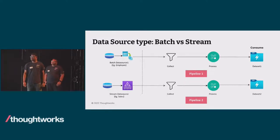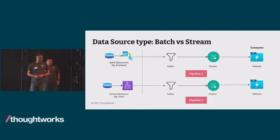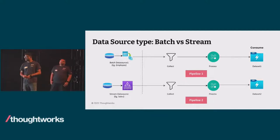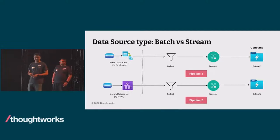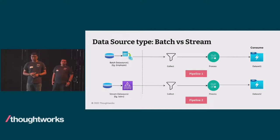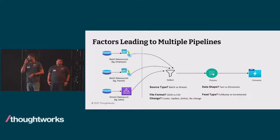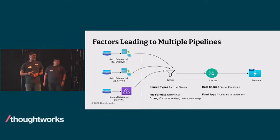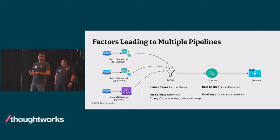Looking at the diagram, a batch data source is something which can be scheduled on a daily, weekly, or monthly basis — for example, employee data. A streaming data source is a live stream of data, like sales leads which keep coming continuously. We have multiple pipelines, and the factors influencing these two separate pipelines include feed type (full dump versus incremental), data shapes (fact or dimensional data), data format (CSV or JSON), and multiple operations like create, update, and delete.